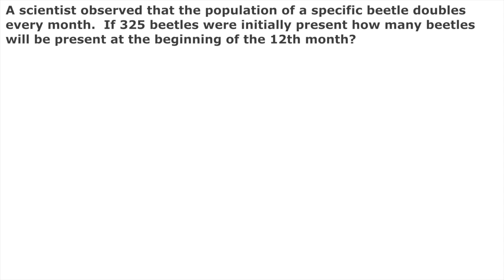It's a sequence in which it's either geometric or arithmetic, and it's a real-life scenario. These are more interesting than just plain plugging in numbers. This one says that a scientist observed that a population of a specific type of beetle doubles every month. If 325 beetles were initially present, how many beetles will be present at the beginning of the 12th month?